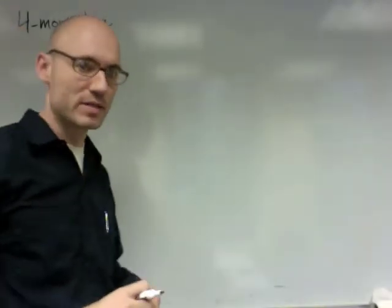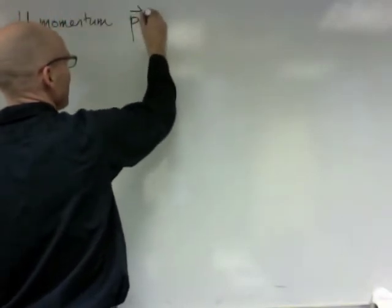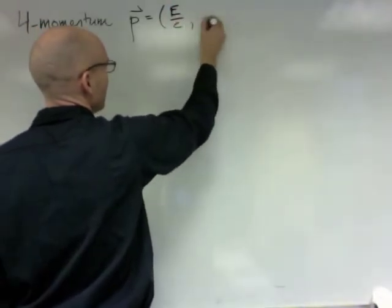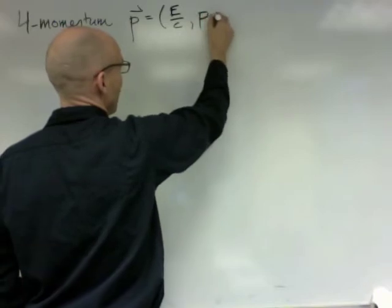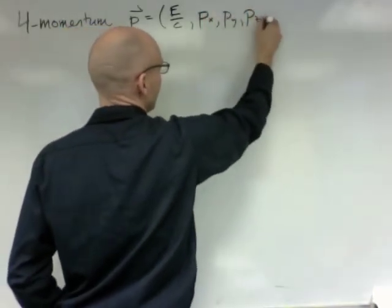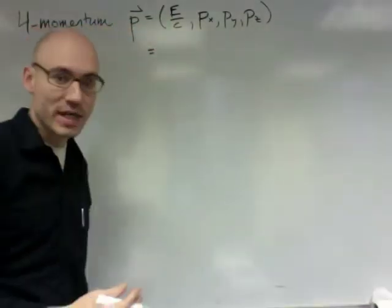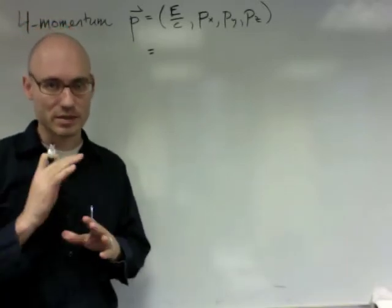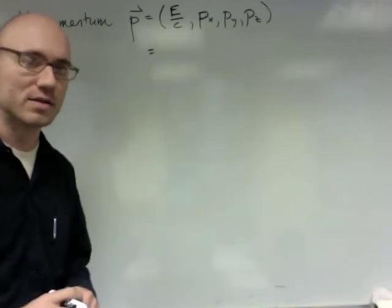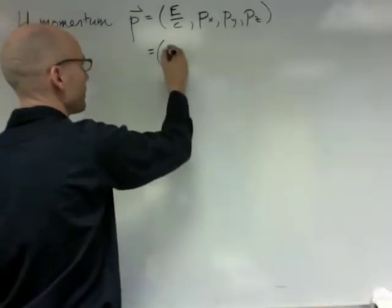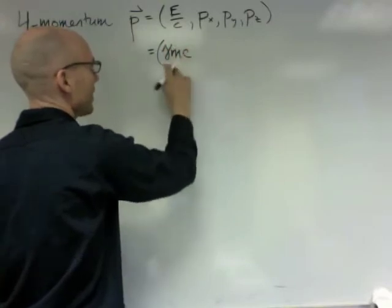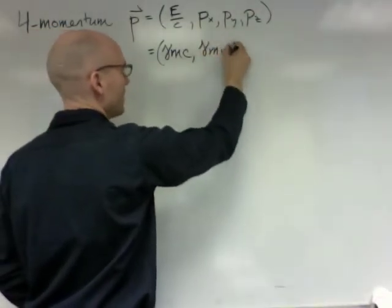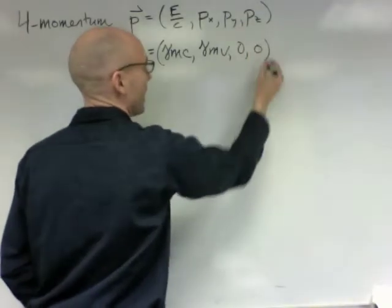The four momentum has a few properties. This four vector is E over c, px, py, pz. And we've been working in one-dimensional situations where we're only considering the x component, not considering the y and z components. We're going to continue with that for the rest of the lecture. So in that case, the energy is gamma mc squared over c, so it's gamma mc. And the x momentum is gamma mv, and y and z are both zero.